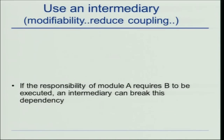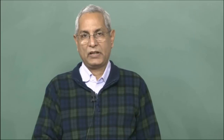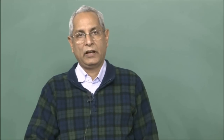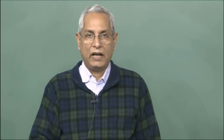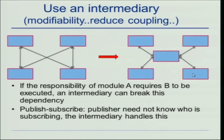Using an intermediary is another very powerful and widely used tactic. There are various modules talking to each other, and if we use one module through which they all communicate, it becomes easier to make changes. We encounter this in the publish-subscribe design pattern, where there are large sets of publishers and subscribers. They do not talk to each other directly — they talk through an intermediary. So we can keep adding publishers and changing their formats without affecting the subscribers.